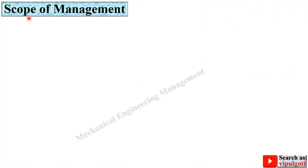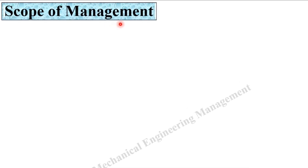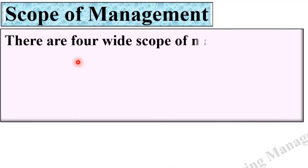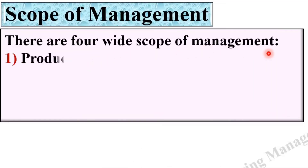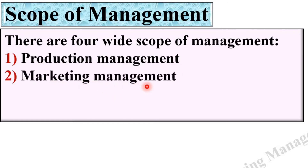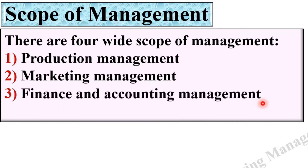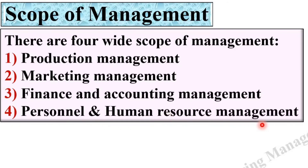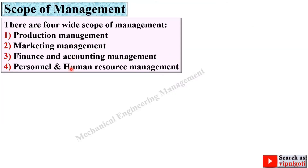Now the last question — scope of management. There are basically four wide scopes of management: first, production management; second, marketing management; third, finance and accounting management; and fourth, personnel and human resource management. Let's see one by one.